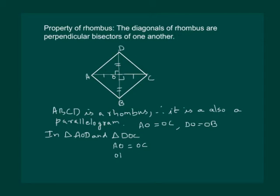OD is equal to OD common side, and AD is equal to DC by property of rhombus.